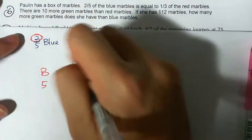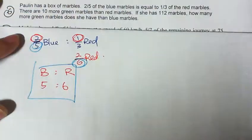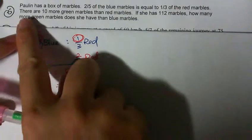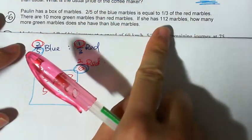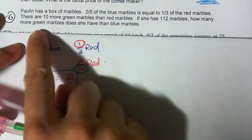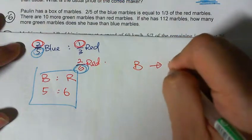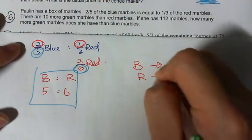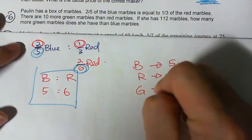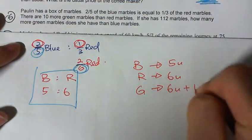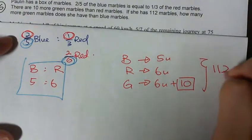The ratio is 5 to 6. There are ten more green marbles than red marbles. If she had 112 marbles, how many more green marbles does she have than blue marbles? So blue will be 5 units, red will be 6 units, and green will be 6 units plus 10 actual marbles. This all adds up to 112.